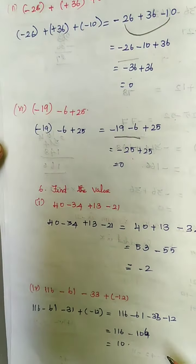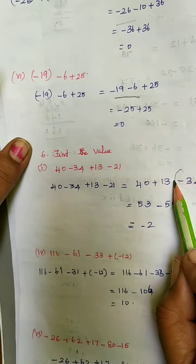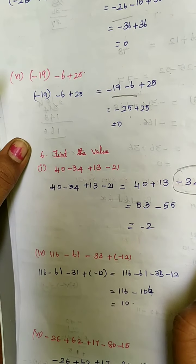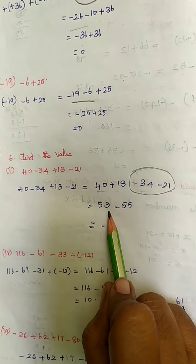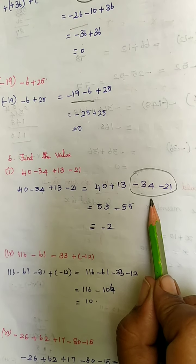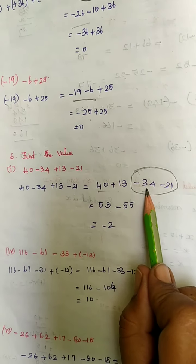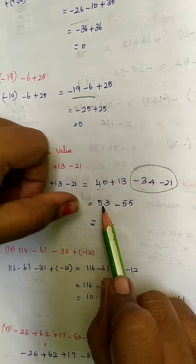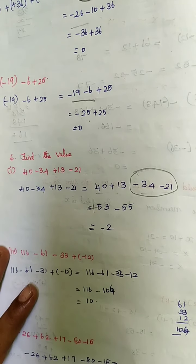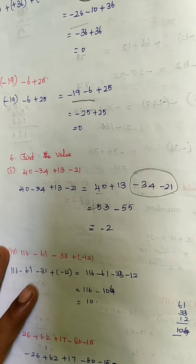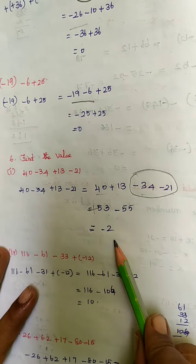Your sixth problem — find the value: 40 minus 34 plus 13 minus 21. Combining numbers with the same symbol: 34 and 21 with minus, and 40 and 13 with plus. If you add 40 and 13 it is 53. Same symbol so add and write the bigger number symbol. 34 plus 21 is 55, bigger number is 34, symbol is minus. One number with plus and another with minus — two different symbols — so subtract. 55 minus 53 is 2, bigger number is 55, symbol is minus, so minus 2.